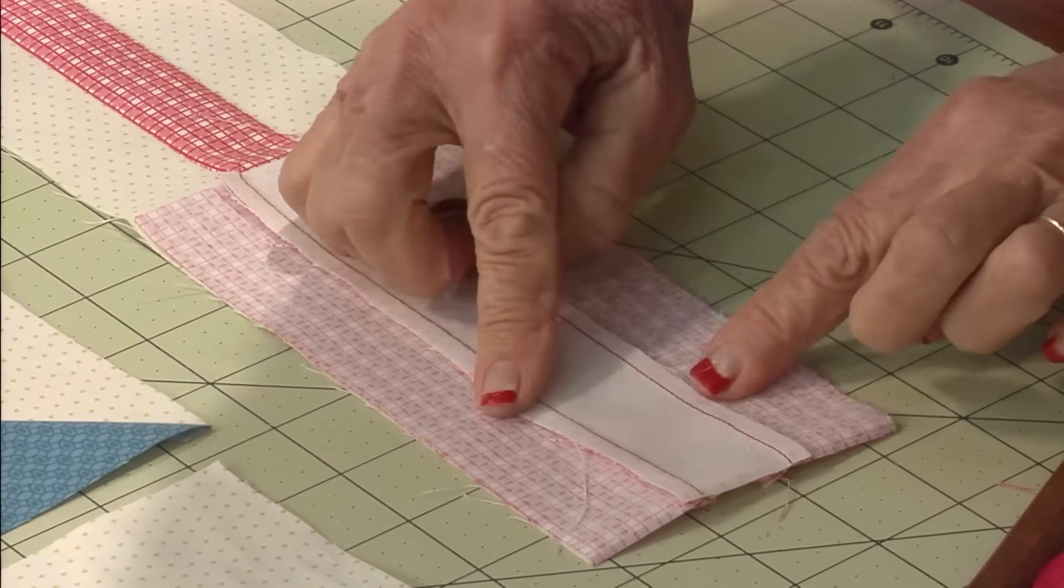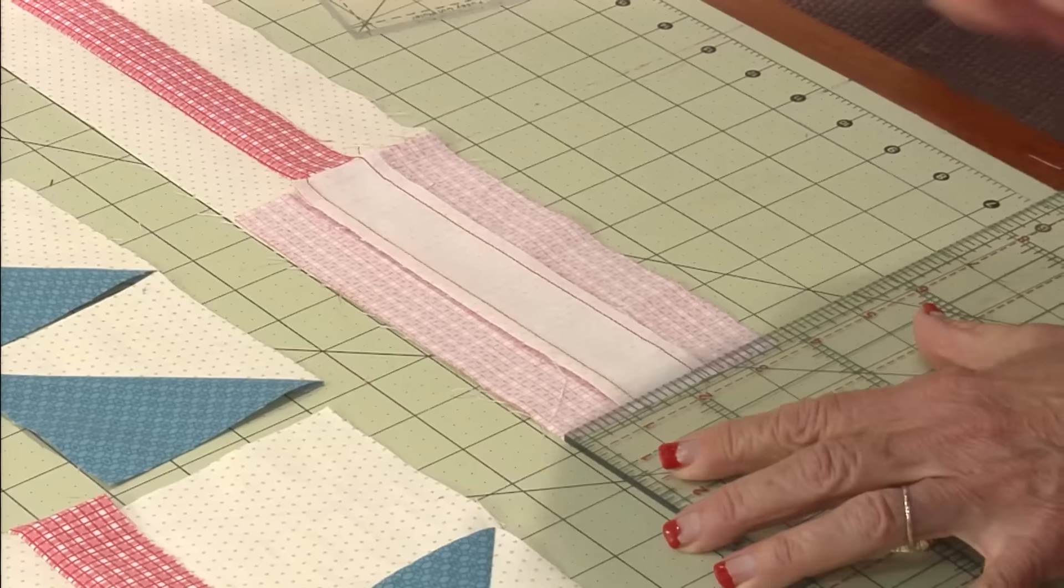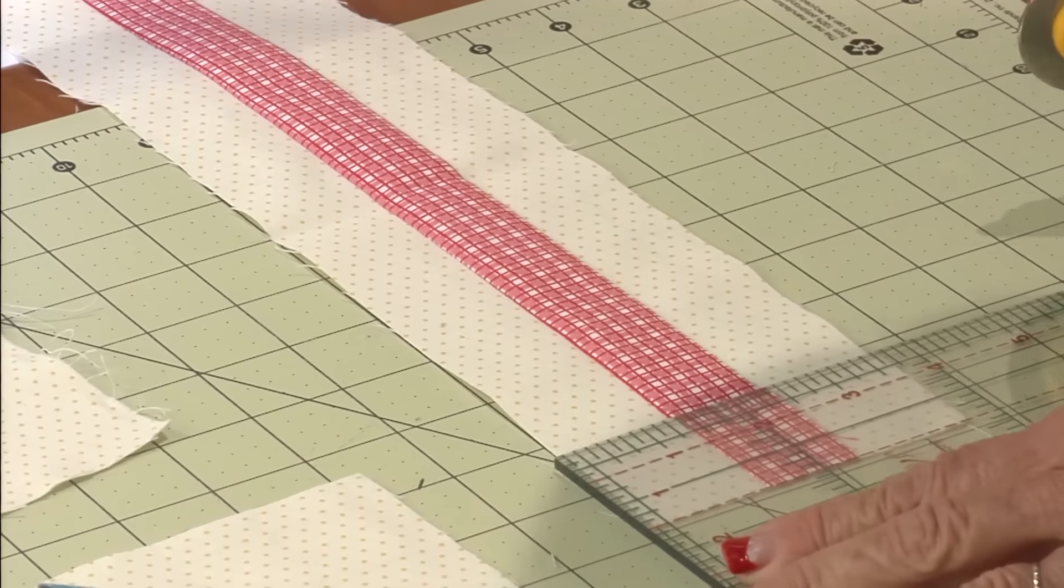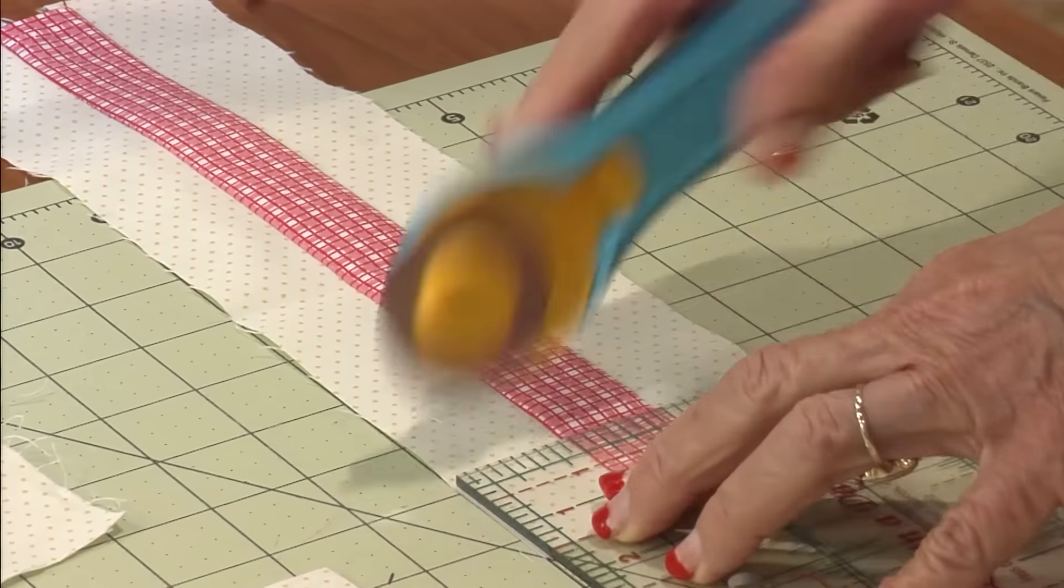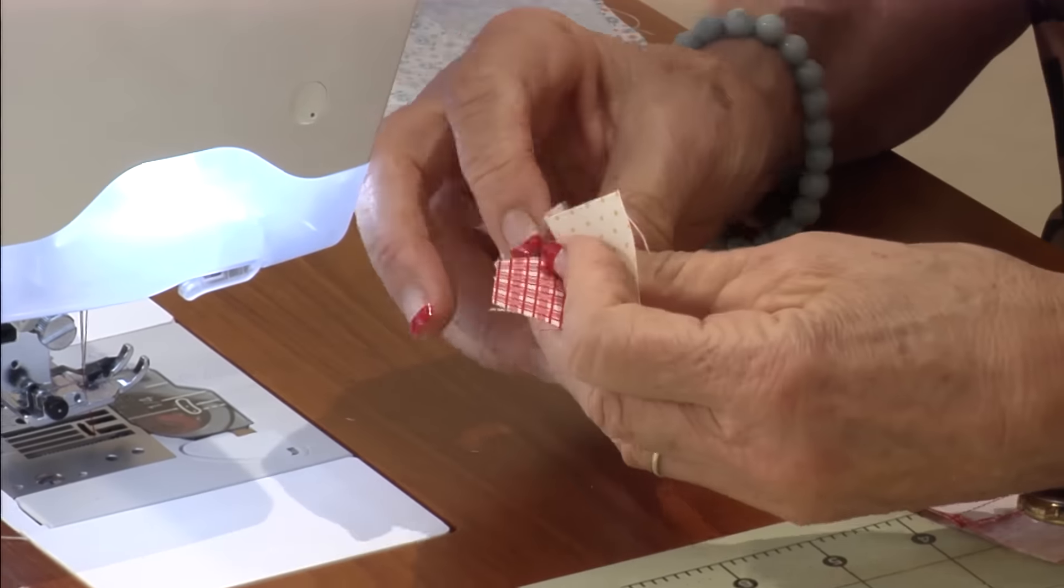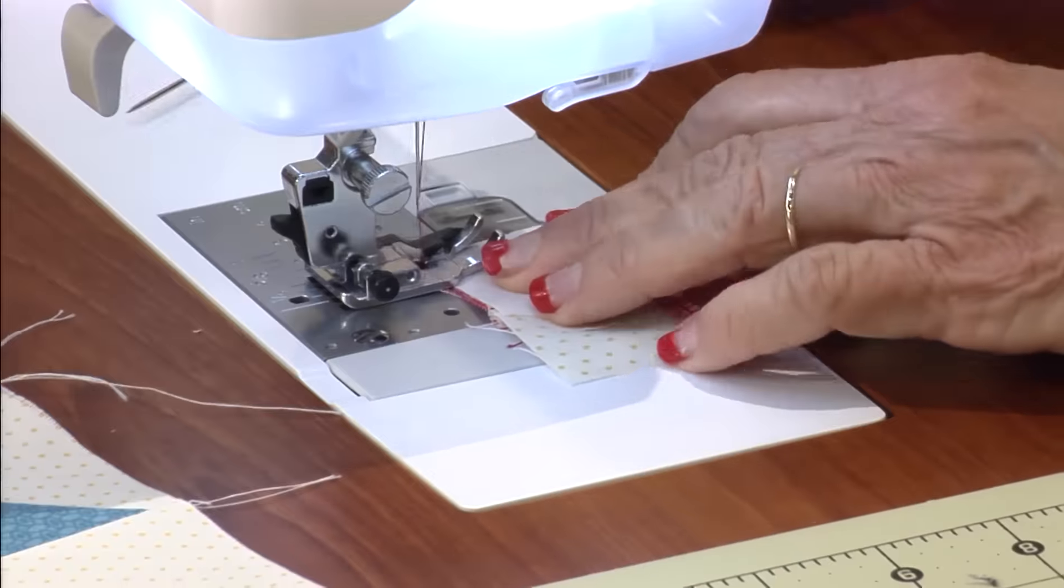Now the nine patch is next. Put two sets of strips together. Cut four one and a half inch segments and then cut the rest over into individual one and a half inch pieces. Sew your nine patch together. Press those seams. Lay it out.